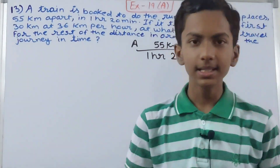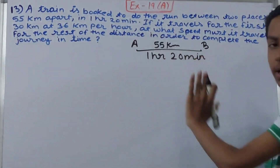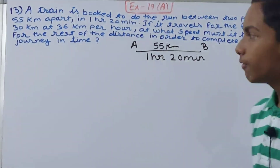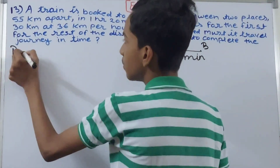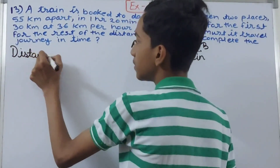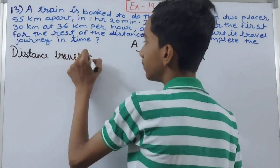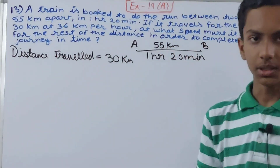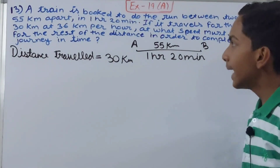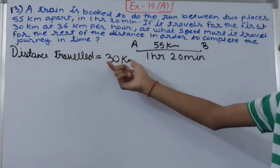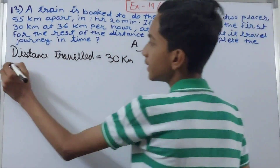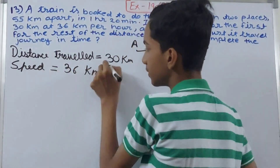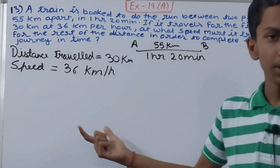The total distance is 55 kilometers and it has already traveled 30 kilometers. So the distance traveled is 30 kilometers. The speed at which this train has traveled this distance is 36 kilometers per hour. We do not know the time yet.